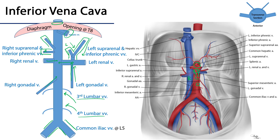The inferior vena cava, once traversing the diaphragm at the caval opening at T8, is going to return that blood from this portion of the caval system into the right atrium.